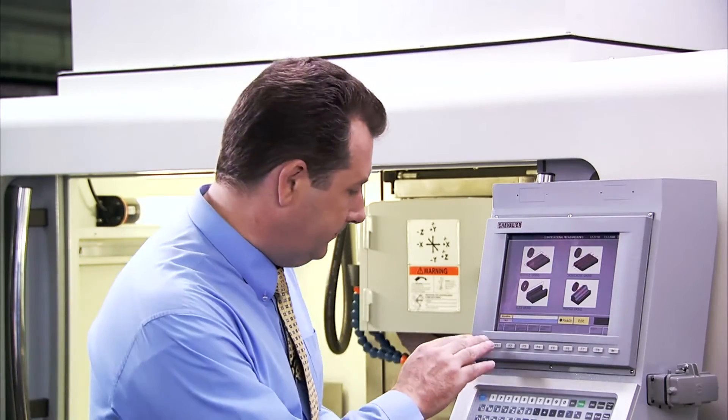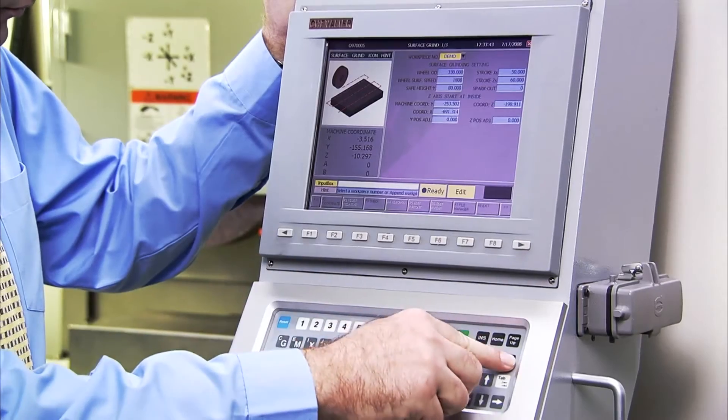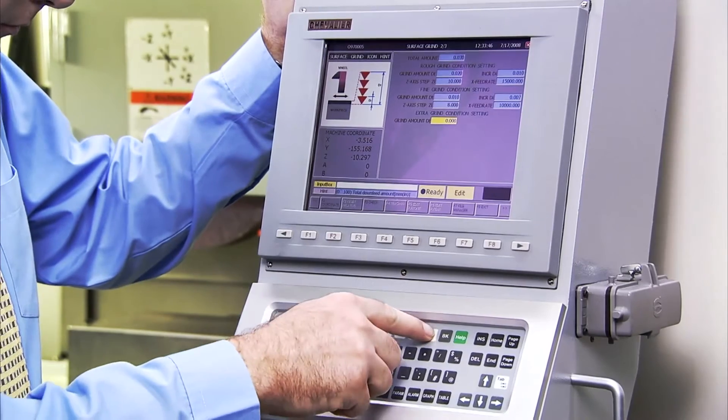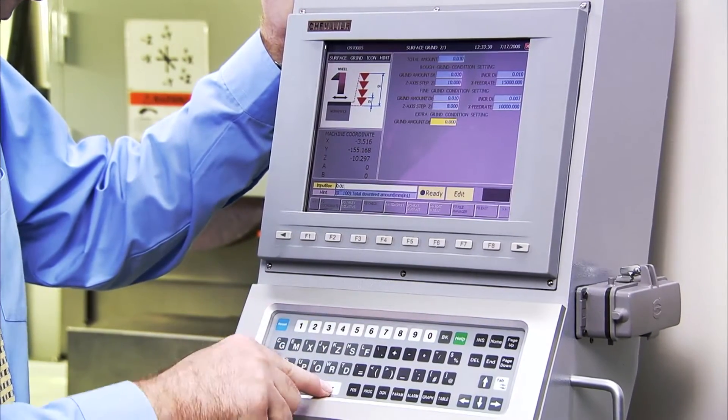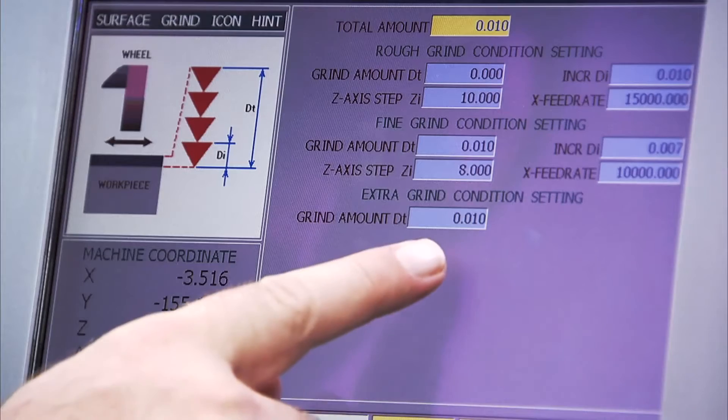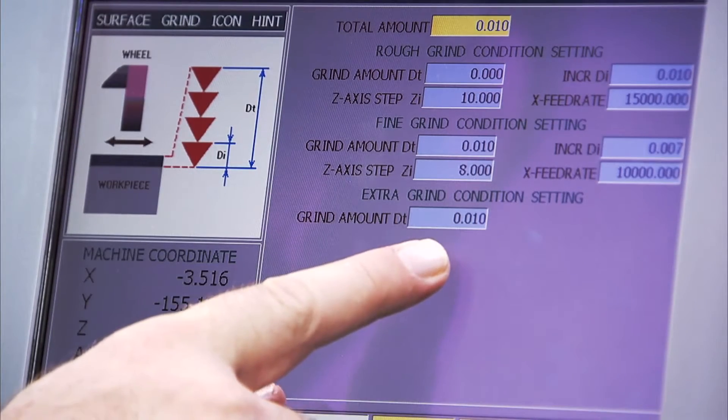One of the unique features of the smart grinder from Chevalier is the additional cut feature. This allows additional cuts to be made without the need to start from the beginning of the grinding cycle. Just input the additional cut depth and the smart machine will do the rest for you.